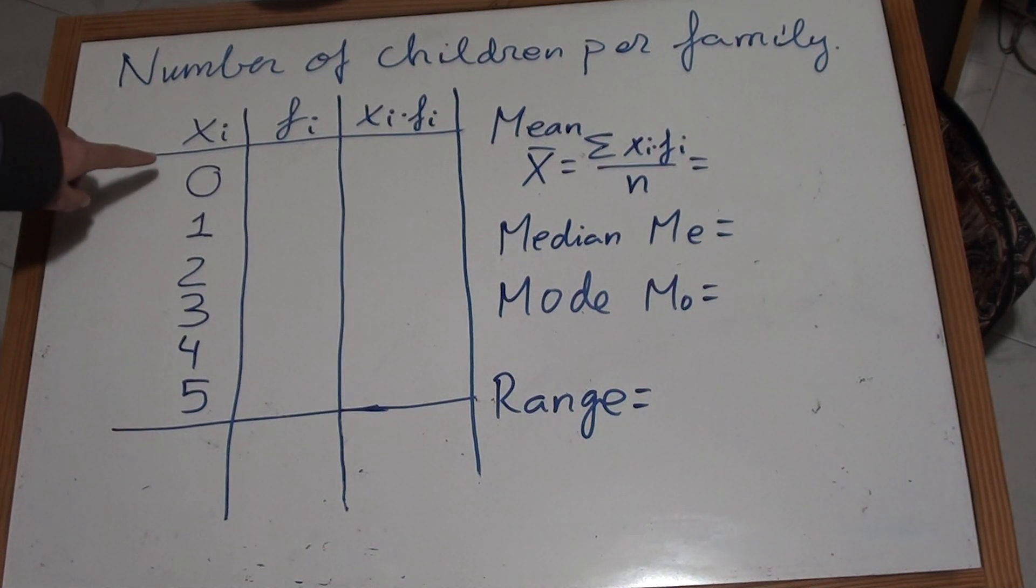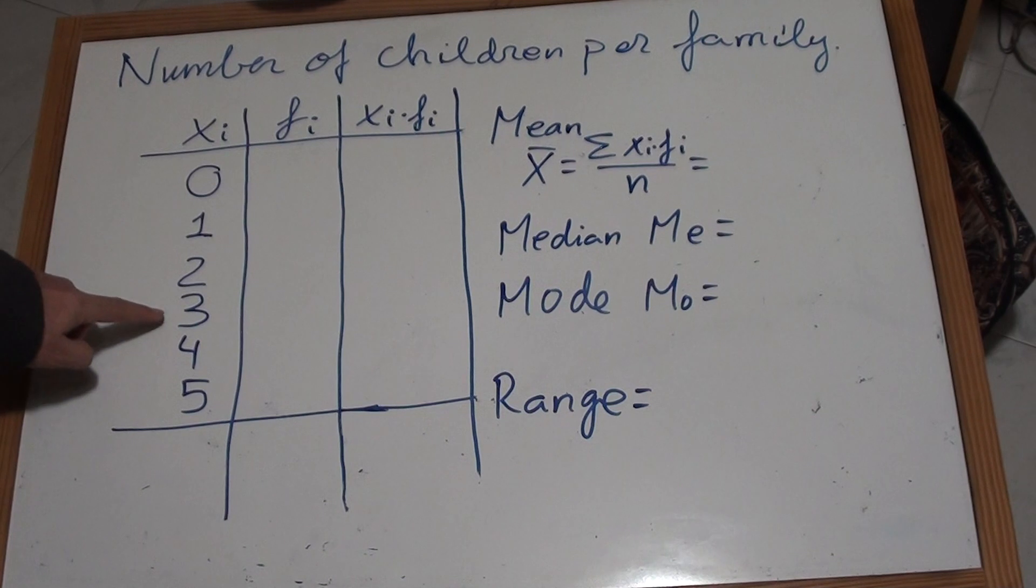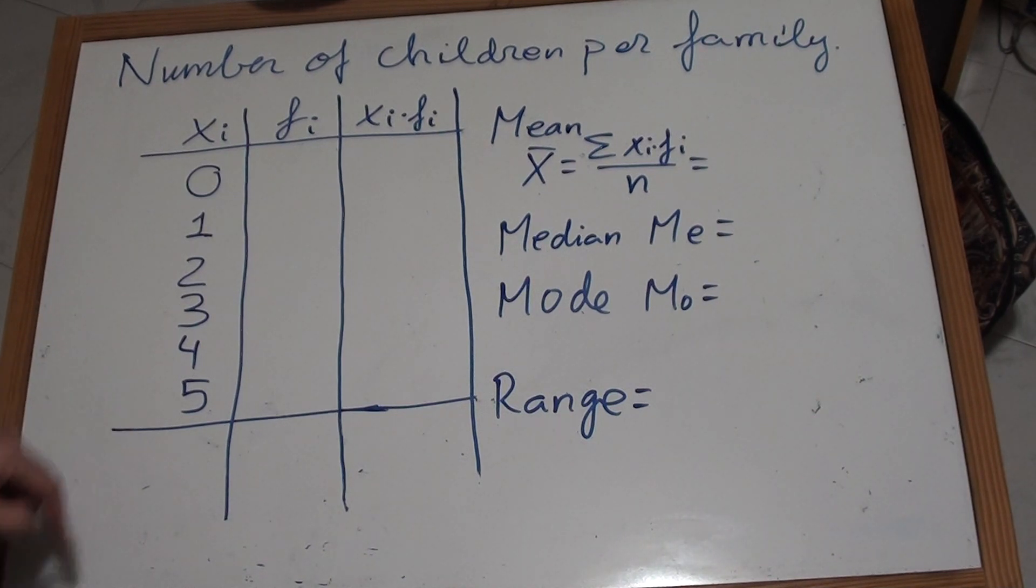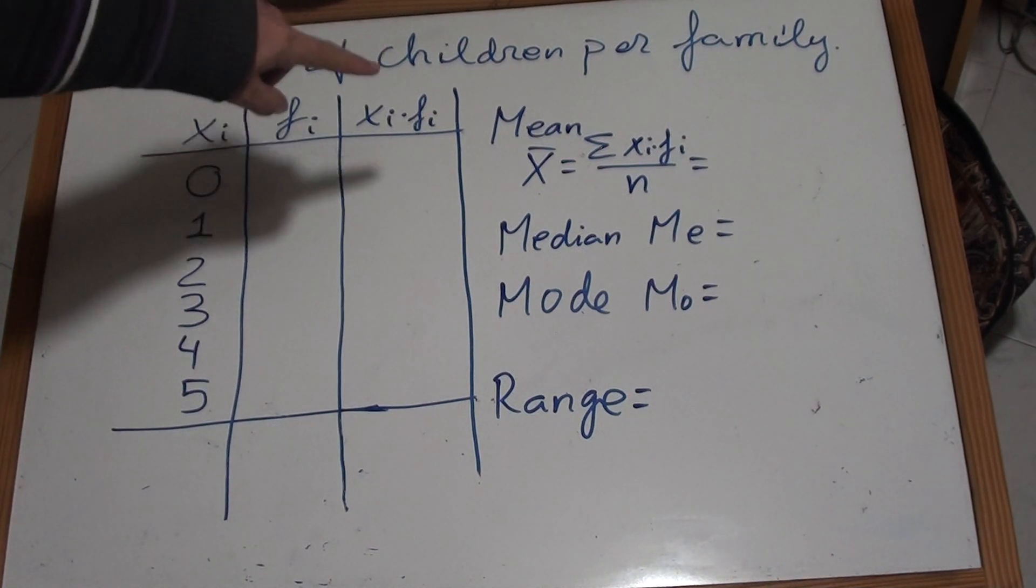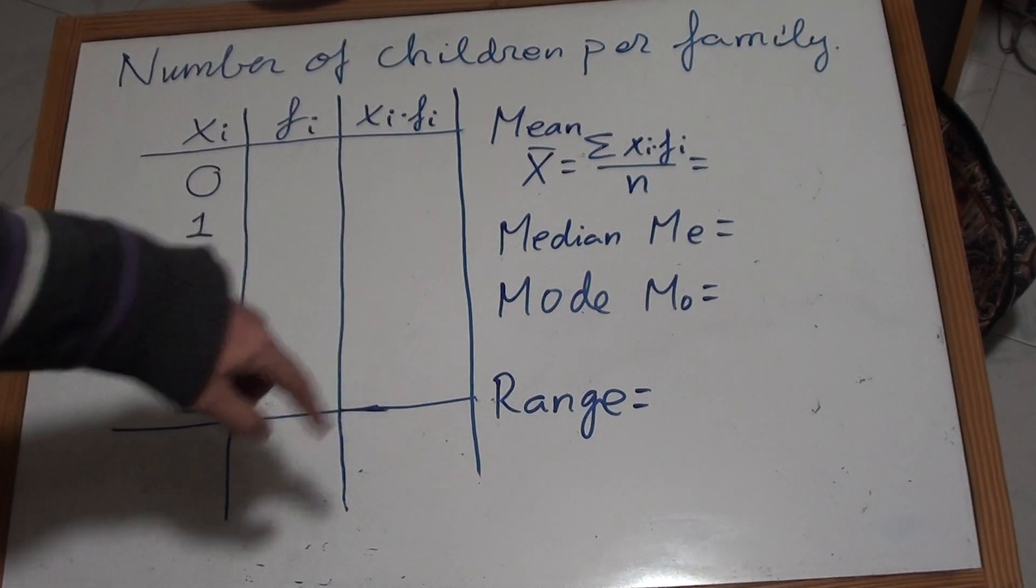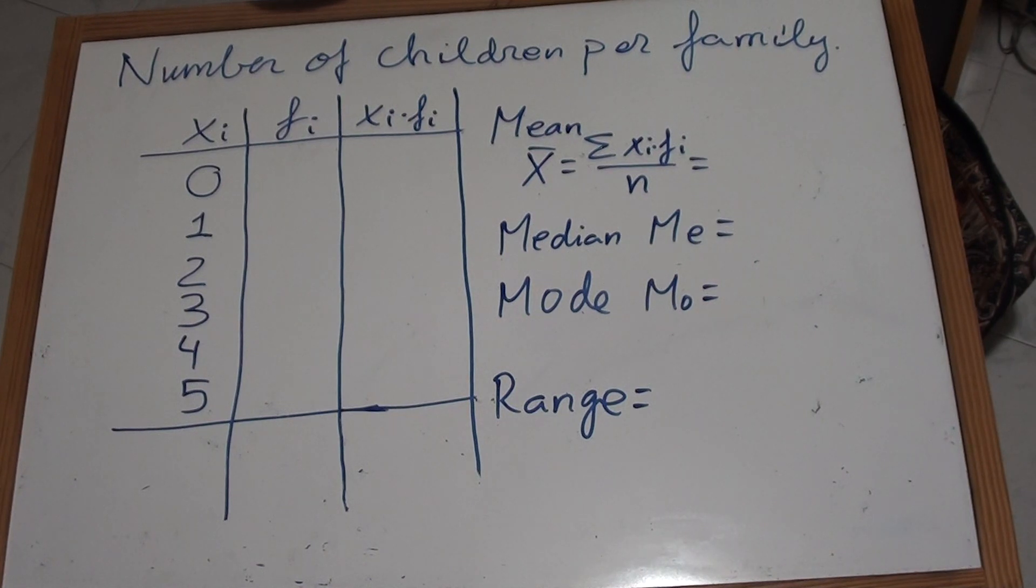So I have put here the data, we call that xi: 0 children, 1 child, 2 children, 3 children, 4, 5. And now we should do the collection of data, and then we will find some parameters: the mean, median, mode, and range, and we will see the meaning of those parameters.